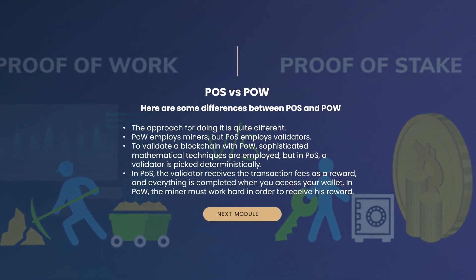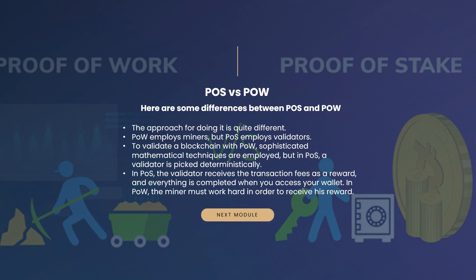Here are some differences between PoS and PoW. The approach for validating is quite different: PoW employs miners, but PoS employs validators. With PoW, sophisticated mathematical techniques are employed, but in PoS a validator is picked deterministically. In PoS, the validator receives transaction fees as a reward, completed when you access your wallet. In PoW, the miner must work hard in order to receive a reward.